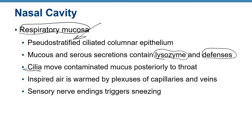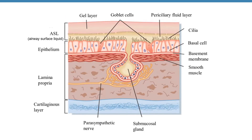The air you inspire becomes warm in your nasal cavity because of plexuses of capillaries and veins. Sensory receptors trigger sneezing when something needs to be expelled. In the diagram you can see the pseudostratified columnar ciliated epithelium and goblet cells that produce mucin, which becomes mucus layered on top of the epithelium.